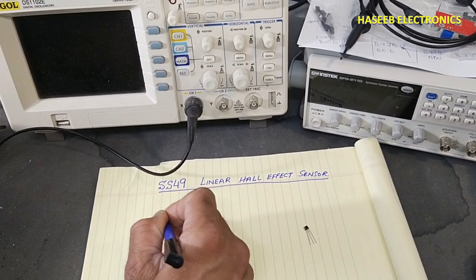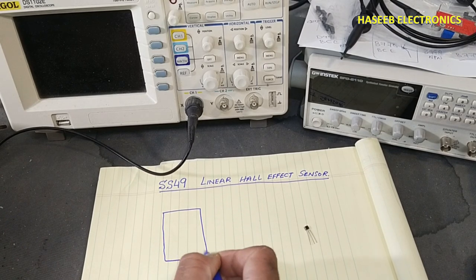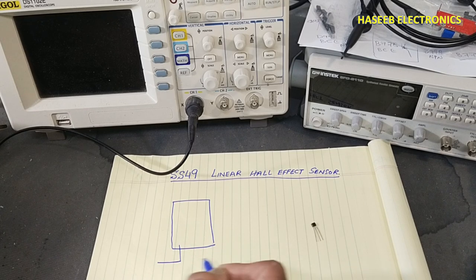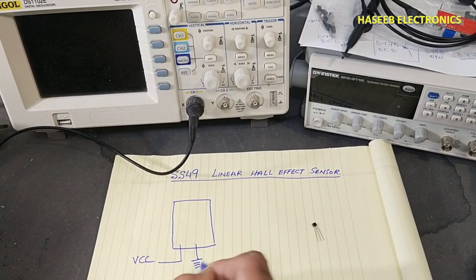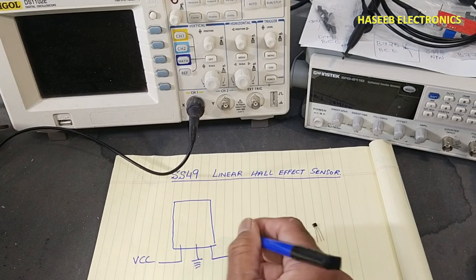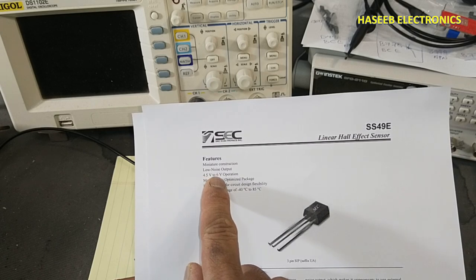If you see its pinout, if you place the part number in front side, left pin that is VCC, center pin ground, the rightmost pin that is output. The supply voltage is 4.5 volt to 6 volt.